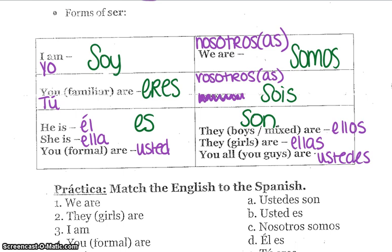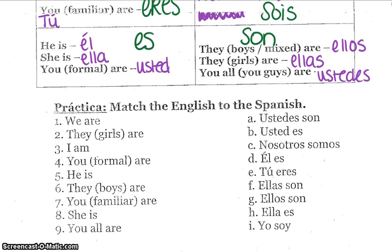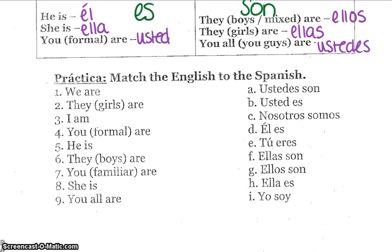Since son is used for so many different subject pronouns, you need to clarify who you are talking about by either using a subject pronoun or using a name. Please take a look at the practice down here. We are going to do this together — I am going to give you a moment to look at it, see if you can figure it out on your own, and then we are going to check our work.